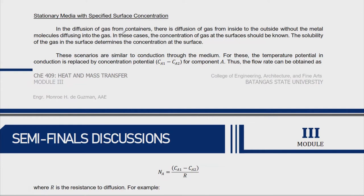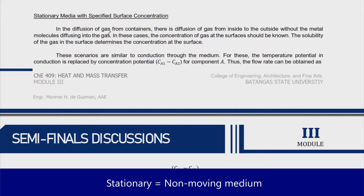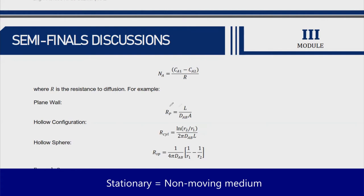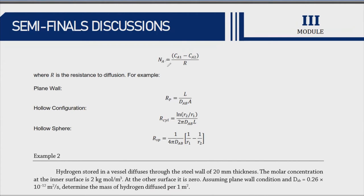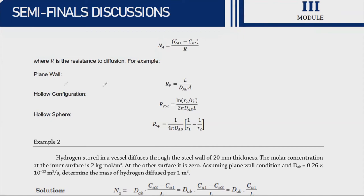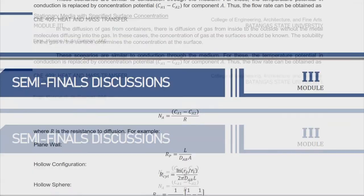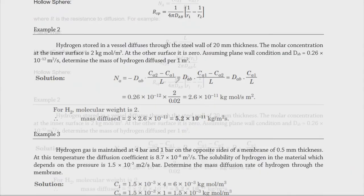Let's talk about stationary media with specified surface concentration, where the medium is not moving. We have equations for the plane wall, hollow cylinder configuration (like a pipe), and hollow sphere. These expressions are analogous to thermal resistance — the resistance to diffusion depends on your material configuration. The flux or rate of diffusion equals the concentration difference divided by the resistance, where resistance depends on the geometry.